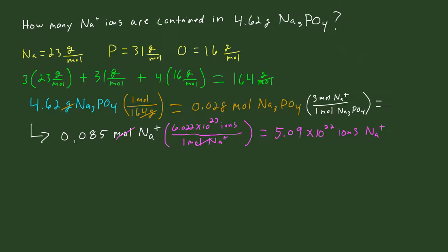So this was a straightforward problem — converting grams to moles, then from moles of trisodium phosphate to moles of sodium ions, and then using Avogadro's number to get the actual number of ions. Hopefully this helped, and we'll see you in the next video. Thank you.